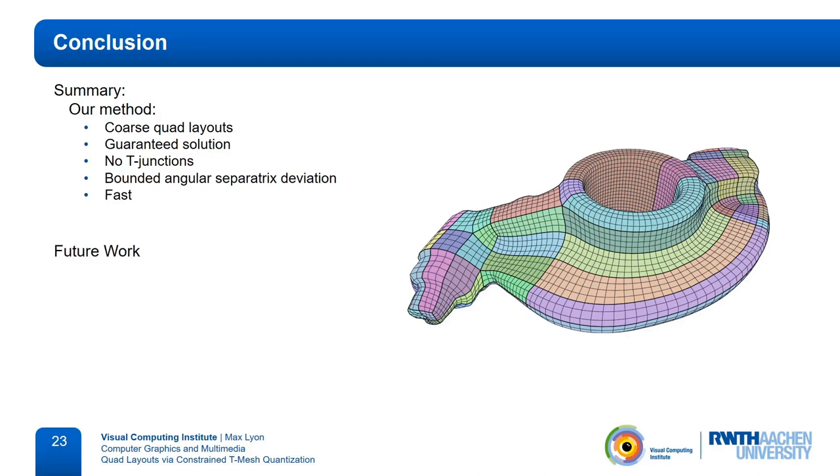For future work, one interesting aspect to look into could be tracing the motorcycle graph directly in a cross field rather than a seamless parameterization. This comes with a few challenges. For example, it may not be possible to find a consistent and valid quantization for the given input, making our integer linear program infeasible. In these cases, it will be necessary to insert additional singularities as has been done before in similar settings. However, a guarantee on angular deviation of separatrices can probably not be given in this setting.